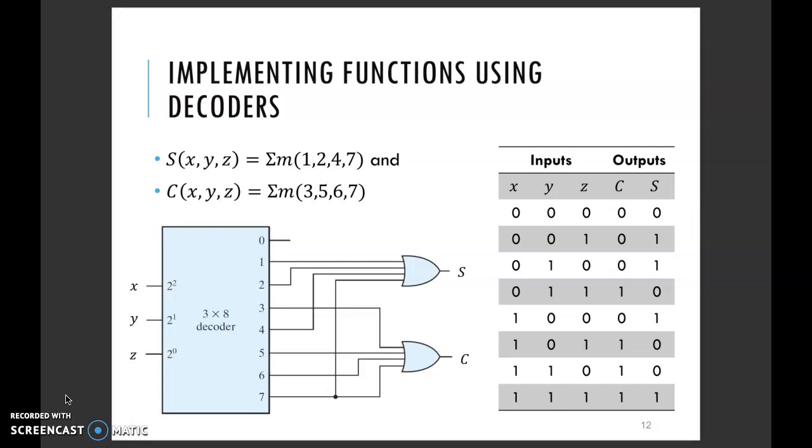At the output, you're just going to choose the outputs 1, 2, 4, and 7, and take these outputs as inputs to an OR gate. The output of this OR gate would represent your summation of the full adder.